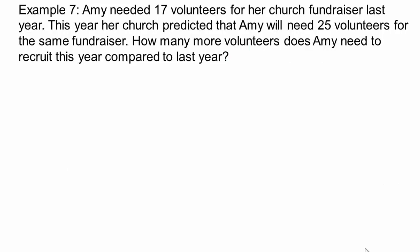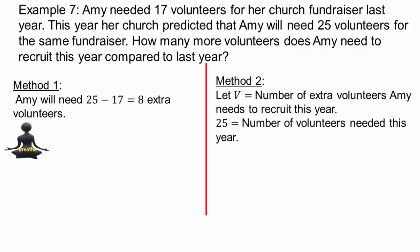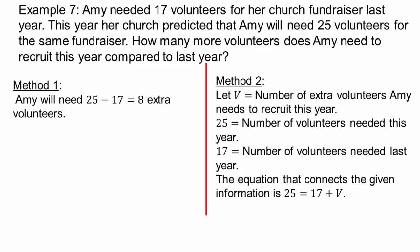Alright, let's try this. Amy needed 17 volunteers for her church fundraiser last year. This year, she predicted she'll need 25. How many more volunteers will you need? A lot of students will say, well, I can just do that in my head. And that would be you can just take 25 minus 17 or eight extra volunteers. But if you don't see that in your head quickly, so then you can do it systematically. You can say, let V be the number of extra volunteers Amy has to recruit this year. So 25 is the total number you need this year. And so that would be 17 is how many you had last year. So 25 should equal 17 plus the new number of volunteers, solve for V, which gives you eight. So either way, you can do the problem as long as you can justify how you got the answer.